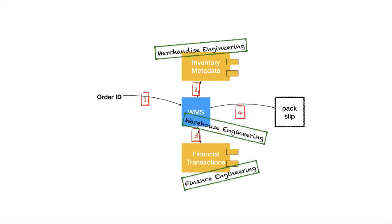We want to know if this works. We've got three pieces of software involved, and each is maintained by a different engineering team. At Stitch Fix, our teams are aligned with different parts of the business. So you could imagine this could create a problem: why would the finance engineering team need to know how pack slip printing works just to make changes to the service they own? Why would the merchandise engineering team have to know this whole thing just to change inventory metadata?